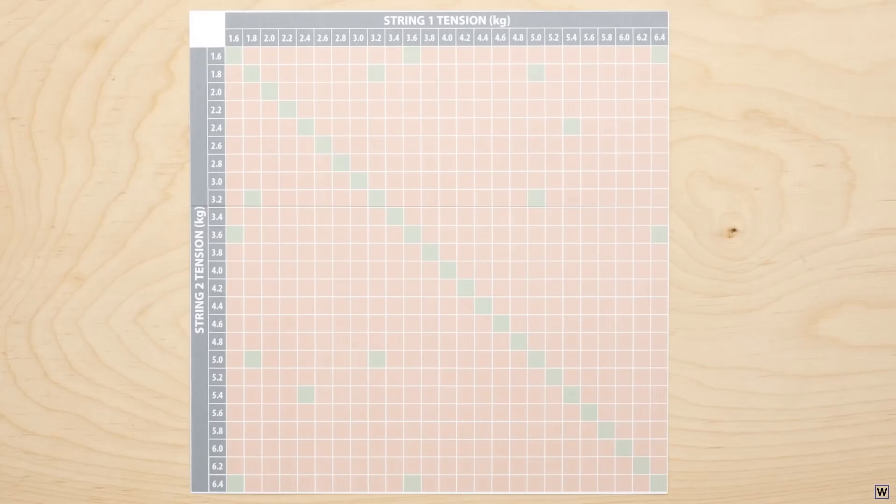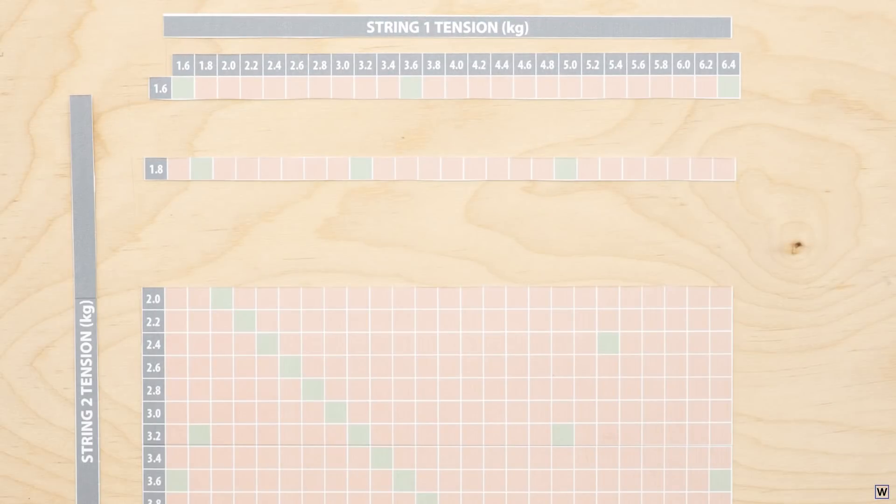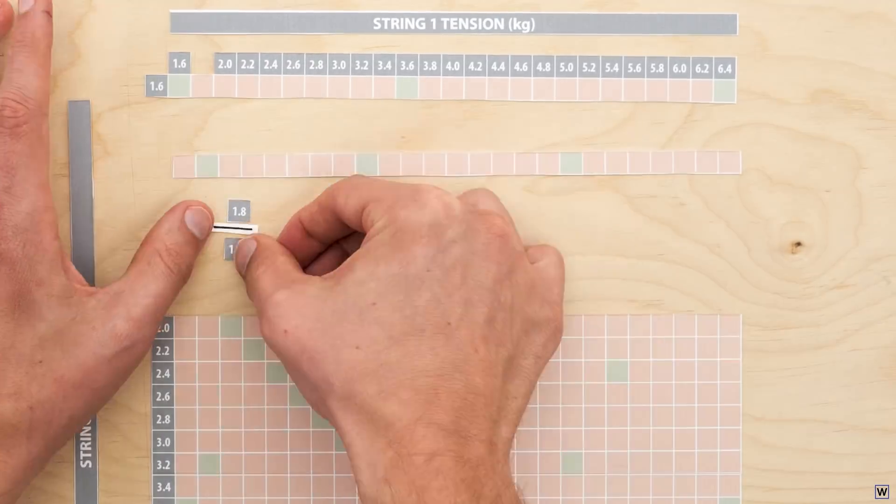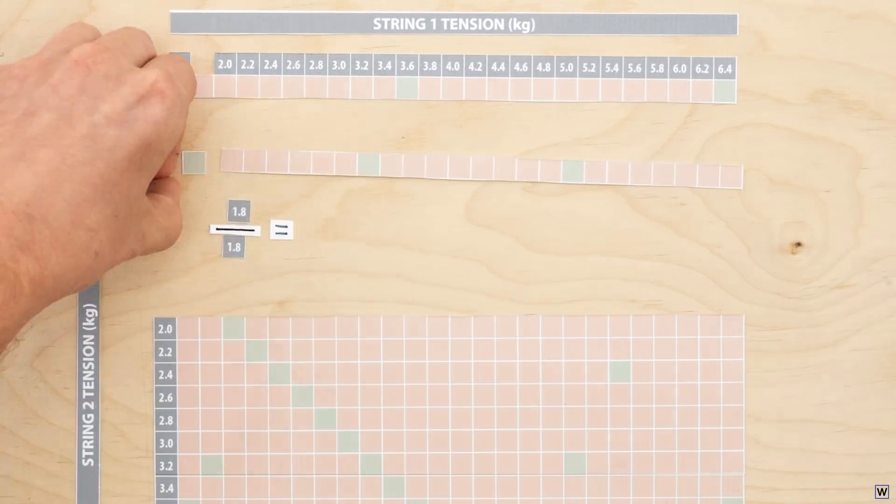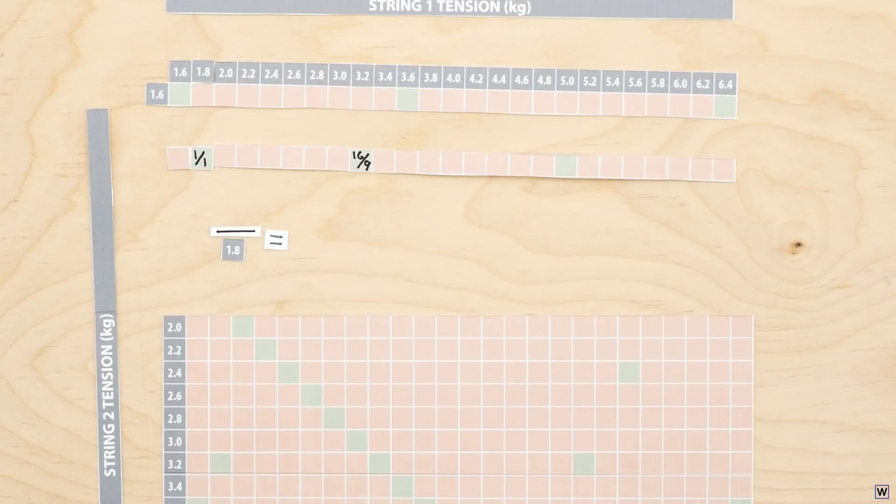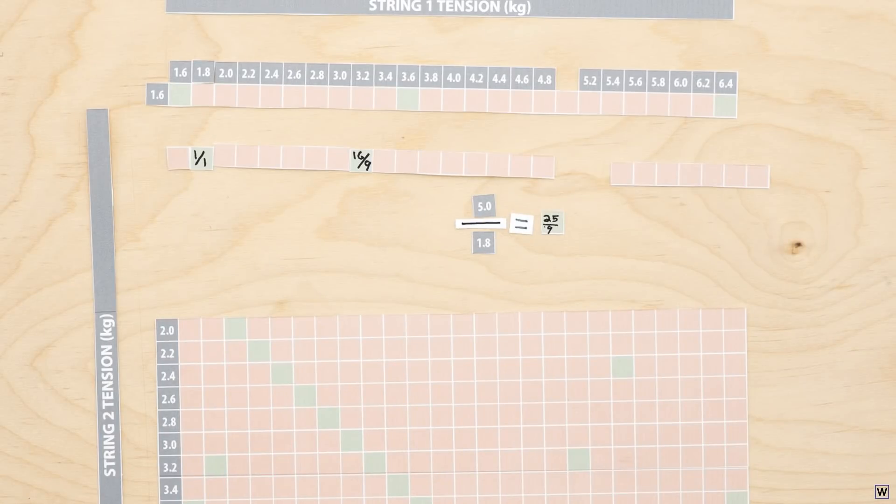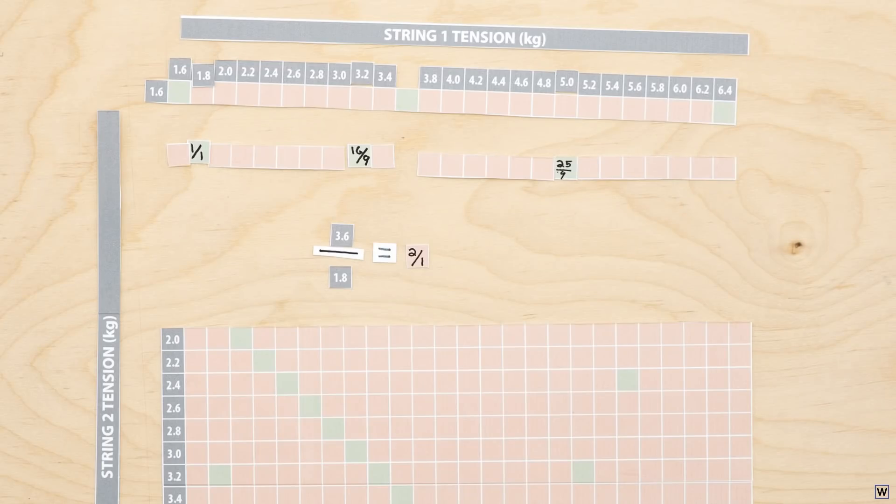Now let's have a look at tension. Maybe the same simple ratio rule applies. If we divide the tensions of our first string by our second, we see that the tensions that sound good together do result in relatively simple ratios. However, some string tensions that don't sound good together, such as 3.6 and 1.8 kilograms, also reduce to very simple ratios.